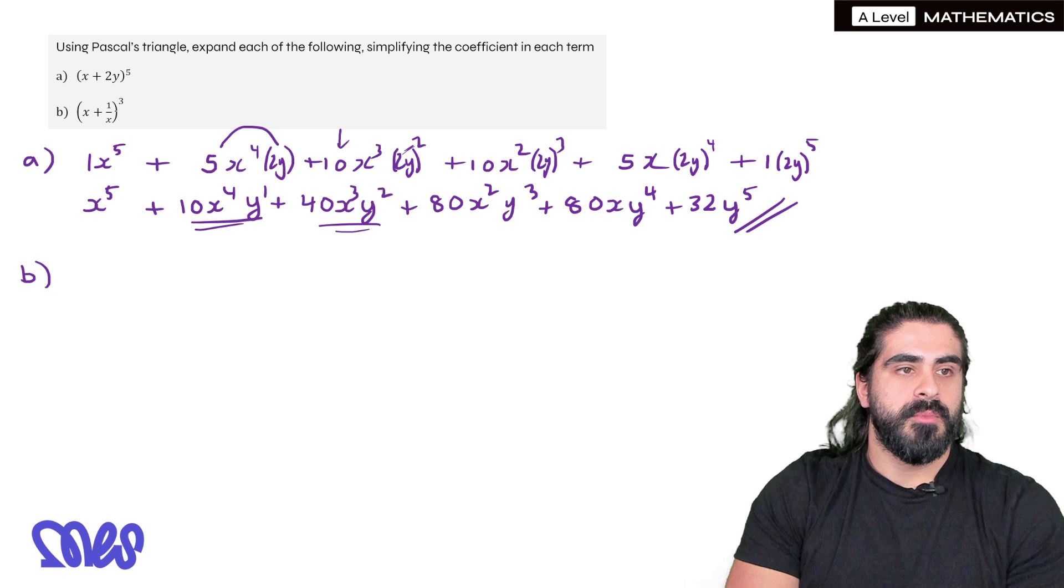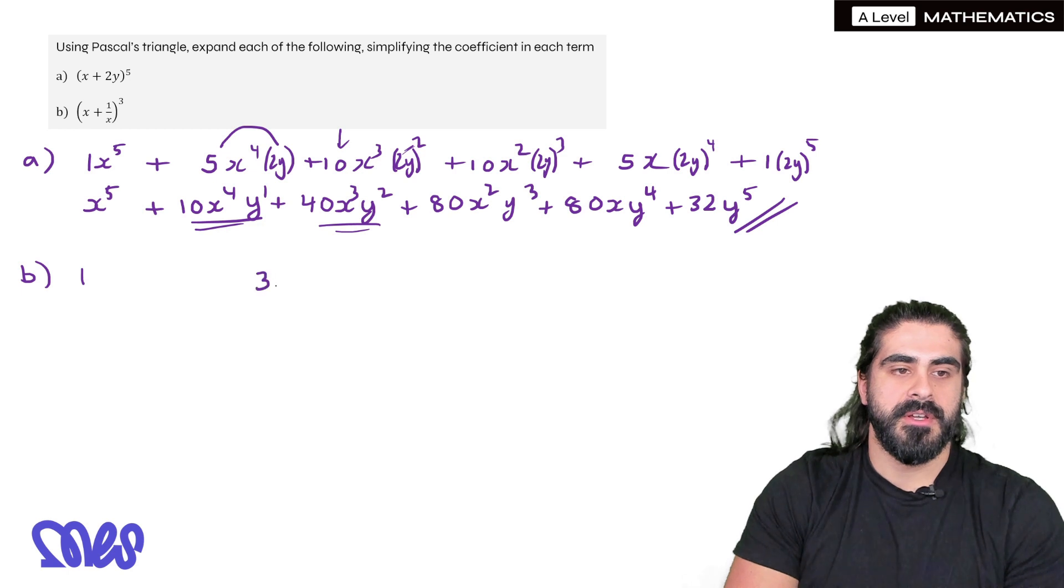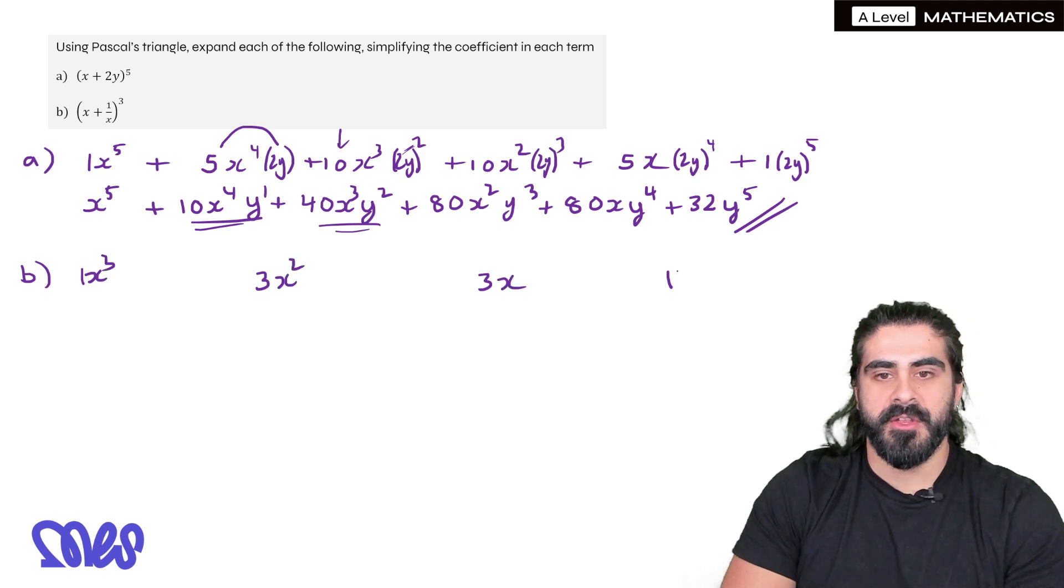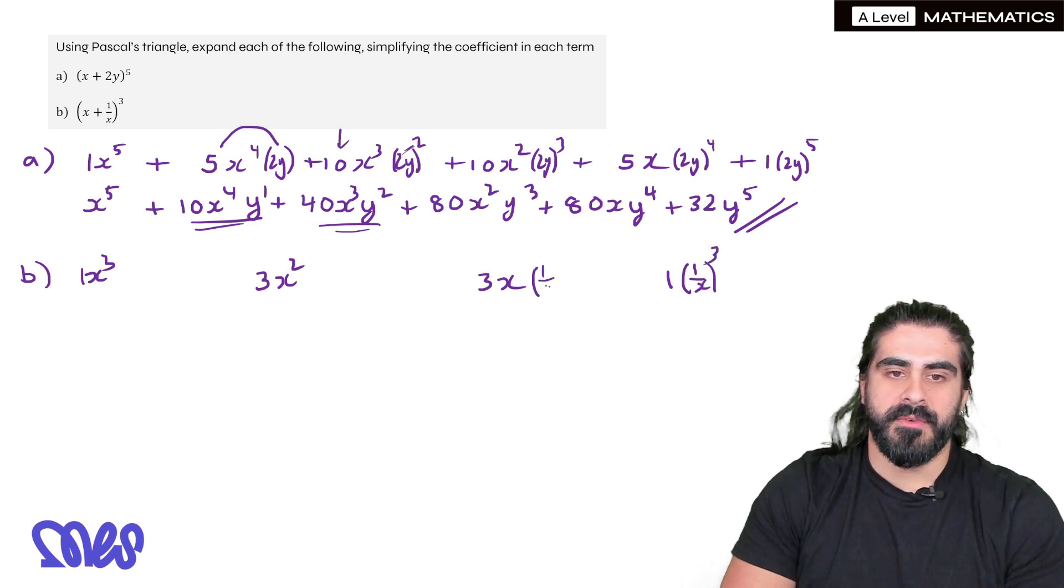Part b, we're doing it to the power of 3, these two terms. So Pascal's third line goes 1, 3, 3, 1. Then we have x³, x², x, and then no x, but going the other way we'll have 1/x³, 1/x², 1/x, and then nothing. Pluses in between and we simplify.